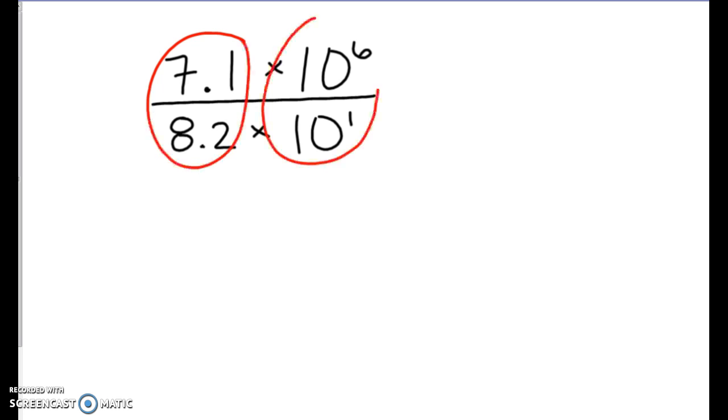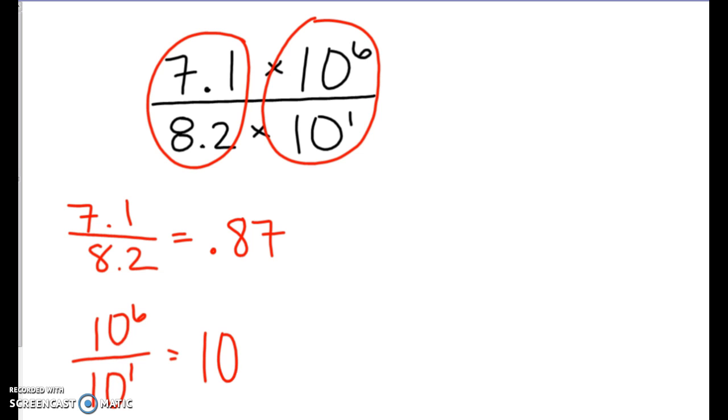We are going to do 7.1 divided by 8.2 first. And we end up with a nasty decimal. So let's just round it to 0.87 for now. And then we have 10 to the 6th divided by 10 to the 1st. Our bases are the same. So we are going to subtract those exponents together to get us 10 to the 5th.